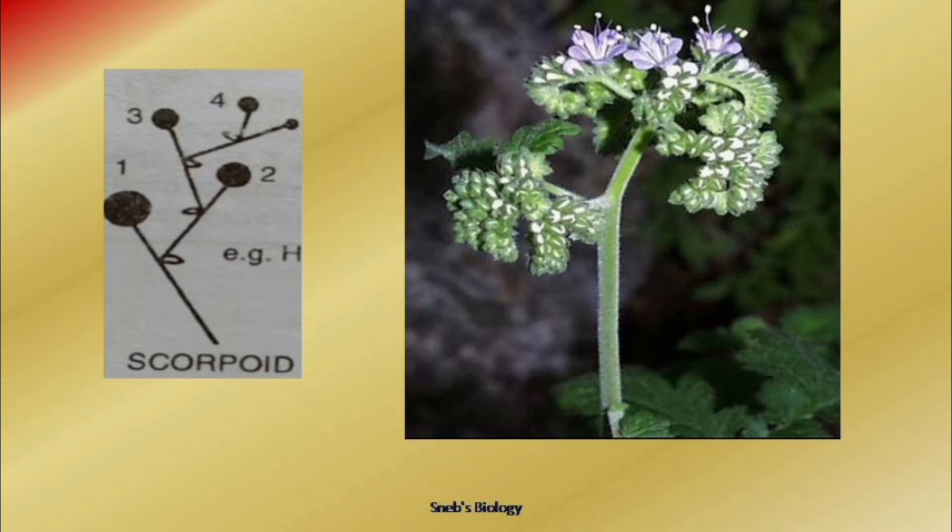In both helicoid and scorpioid cases, there is only one branch produced at a time, so we call it uniparous or monochasial.